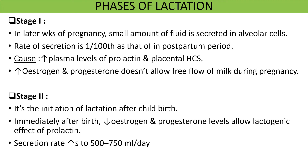The second stage of lactogenesis is when initiation of lactation occurs. Immediately after birth, the sudden loss of estrogen and progesterone secretion from the placenta allows the lactogenic effect of prolactin to act. Thus, the milk secretion rate increases to 500 to 750 ml per day, and in the next 1 to 7 days, breasts begin to secrete milk instead of colostrum.